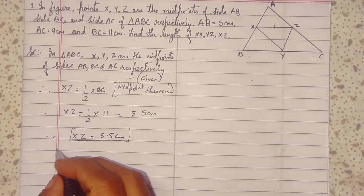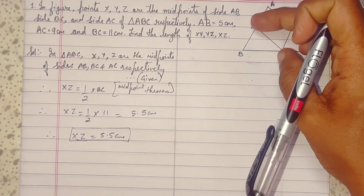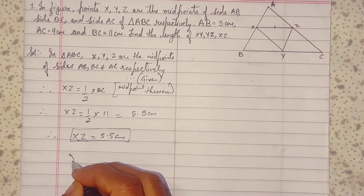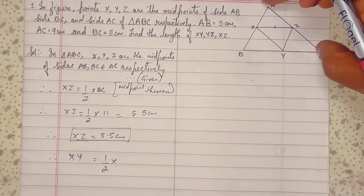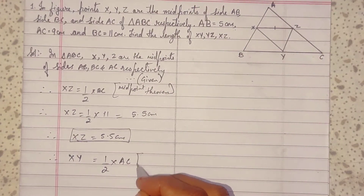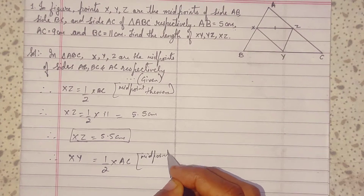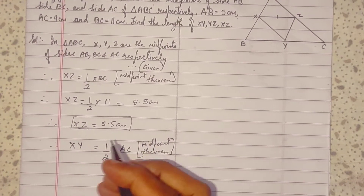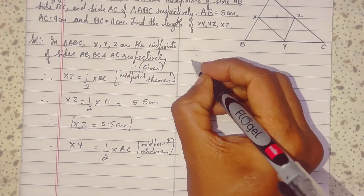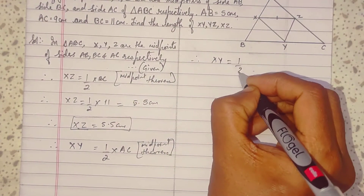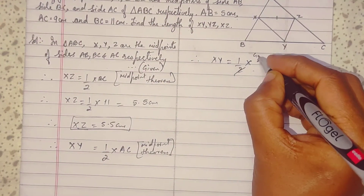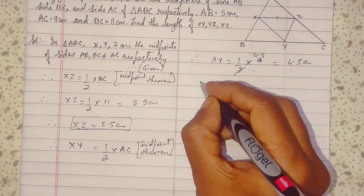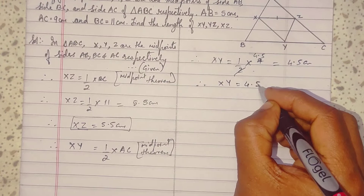Similarly, XY equals half of AC by the midpoint theorem. XY equals half of 9, which is 4.5 cm.